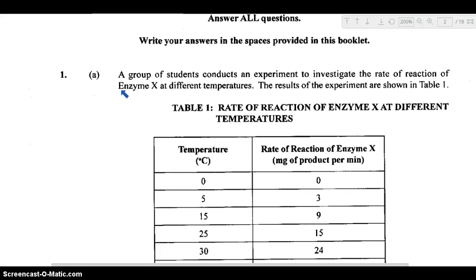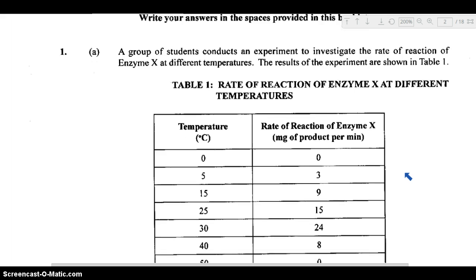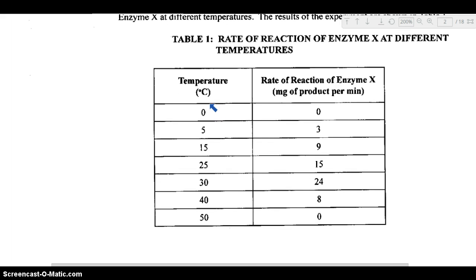We have question 1a. A group of students conducts an experiment to investigate the rate of reaction of enzyme X at different temperatures. The results of the experiment are shown in table 1. We have the temperature values here in this column, from 0 to 50 degrees Celsius, and then we have the values for the rate of reaction of enzyme X in milligrams of product per minute, showing how fast enzyme X would react, how fast it would convert substrate into product.